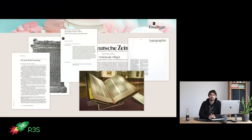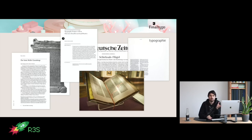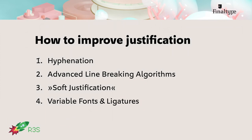I did a lot of research on the history of justification both in print and digital design. There were several points in digital history where we had great concepts and working solutions for beautiful justification, but none of them eventually made it to the web. So I asked myself: why is that, and how could we improve justification on the web? I want to present four different approaches: first, the current state of hyphenation; second, the crucial topic of line breaking and why advanced algorithms are not implemented yet; third, ideas for something I call soft justification; and last, how to improve justification via variable fonts and OpenType ligatures.